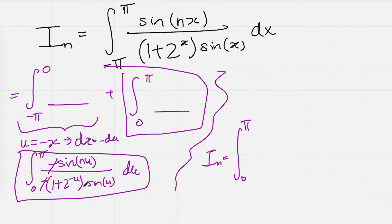But I noticed that both these integrands look quite similar. I've got sine of nx divided by sine x in both of them. So I can actually just factor that out. And what am I left with? Well, from this integrand, I've got 1 over 1 plus 2 to the x. And from this one, I've got 1 over 1 plus 2 to the minus x. And then dx.